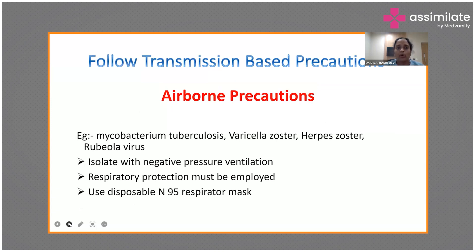For airborne precautions, the particles remain in the atmosphere. Diseases requiring airborne precautions include Mycobacterium tuberculosis, varicella, herpes zoster, and rubeola virus. These patients must be isolated in a negative pressure ventilated room, and respiratory protection is mandatory to protect yourself.